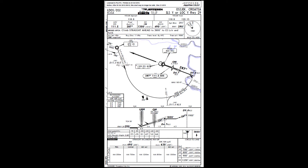Hello everyone. Today we will learn how to execute a DME arc using a collocated NDB. On your screen you can see an ILS approach chart for Osijek airport, Croatia, which I will fly in a flight simulator in just a few minutes. First, I would like to explain a few things about DME arcs.